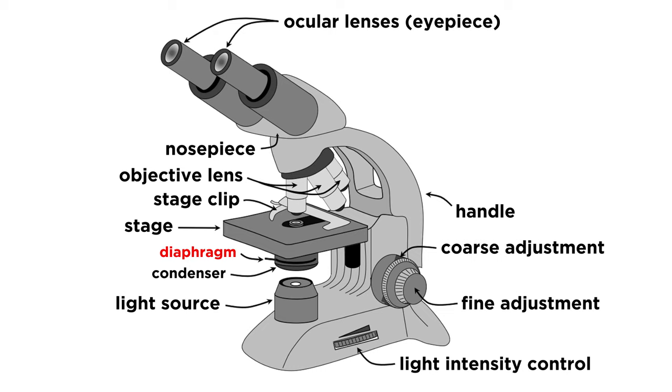Attached to the stage is the diaphragm, which controls the contrast of the image by controlling the amount of light from the light source that you expose the specimen to. On the sides of the stage are the slide adjustment knobs, which are used to move the specimen so that what you want to see is in your field of view.